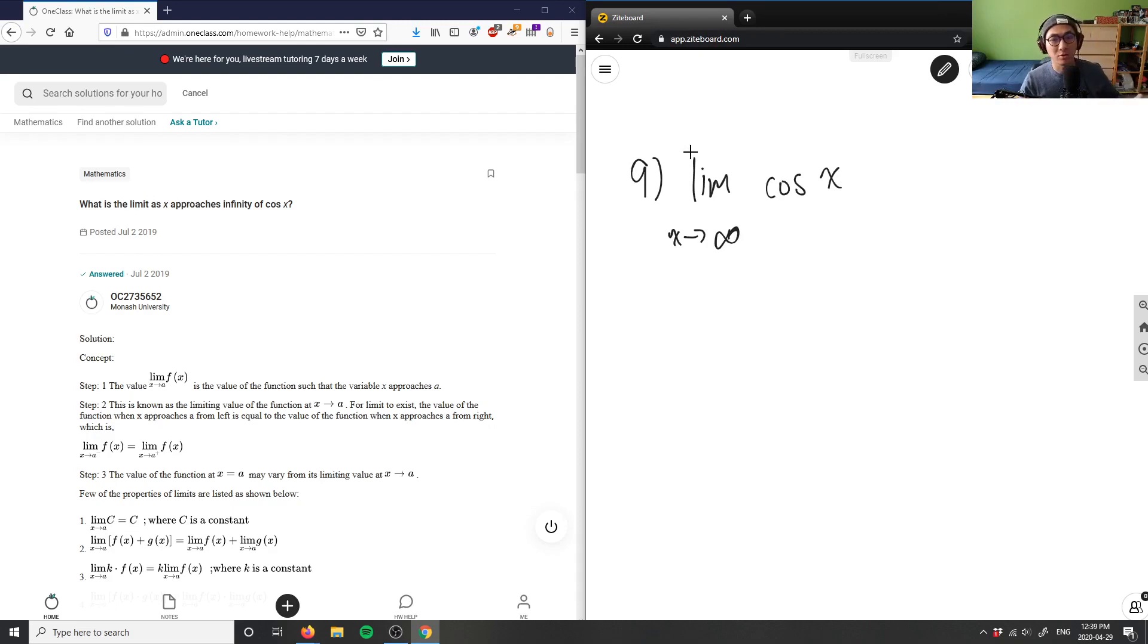So if you think about this question, x approaches infinity of cosine x. Let's think about the function here, cos x, and we can actually kind of graph it out here, cos x here.